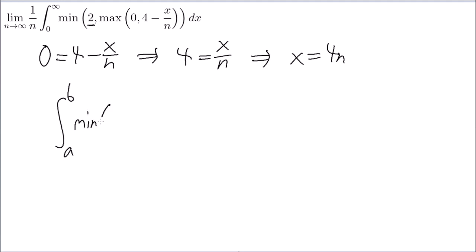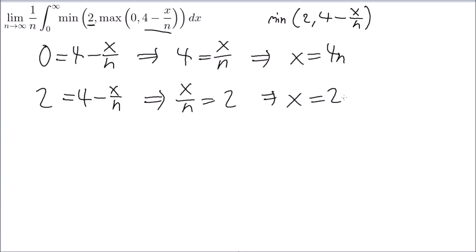Like, let's say if it was 0, then the min is going to be 0. That's piece of cake, right? So I don't need to do a case for that. Well, how about, what if the max was this? Then I need to find another intersection for the min of 2, 4 minus x over n. So when is 2 equal to 4 minus x over n? This gives me x over n equal to 2. I see that x equals 2n.